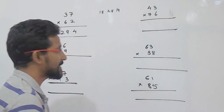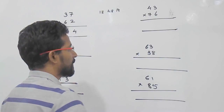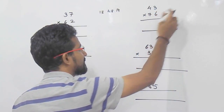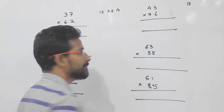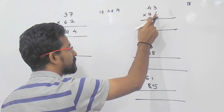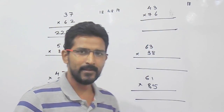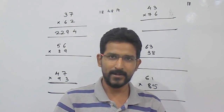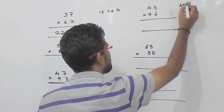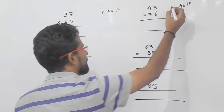Now we will see the next example, 43 into 76. Again, what you have to do? Multiply the unit place value, 3 into 6 that is 18. Then cross multiply the values here, 4 into 6 is 24, 7 into 3 that is 21. So, 24 plus 21 that is 45. So, write 45 here. Then next, 4 into 7 that is 28.